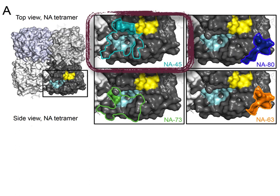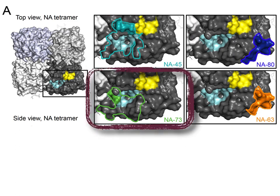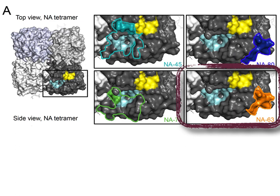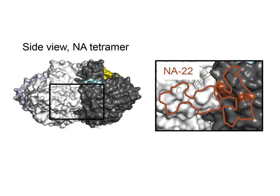Looking at four of the antibodies shown here: NA45 sits right on top of the light cyan enzymatic site, as does NA73, which also sits on the enzymatic site. Whereas NA80 is on the lateral ridge and is nowhere near the hemoabsorption site or the enzymatic site. NA63 is the same — it's on the lateral ridge.